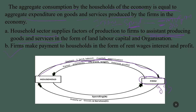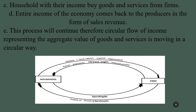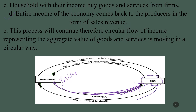Using the factors of production, the firm makes factor payments. The household sector will receive income as factor payments. The household sector receives income and spends it, and in return the firms' sales receipts come from the household sector spending on goods and services.